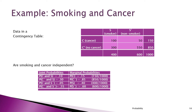The marginal totals are useful — 150 people died of cancer total, 850 did not. There are 400 smokers and 600 non-smokers. Dividing by 1,000 gives joint probabilities: the probability of cancer and smoker (C and S) is 0.10; not C and S is 0.30; C and not S is 0.05; not C and not S is 0.55. The marginal probability of C is 0.15, not C is 0.85, smoker is 0.40, non-smoker is 0.60.